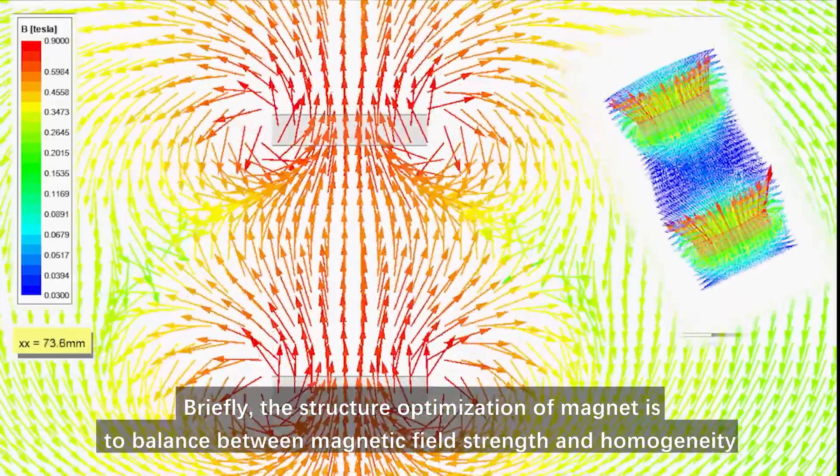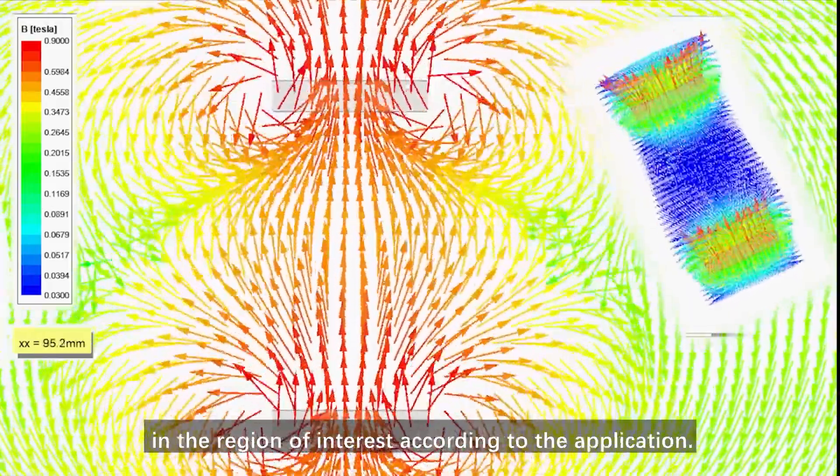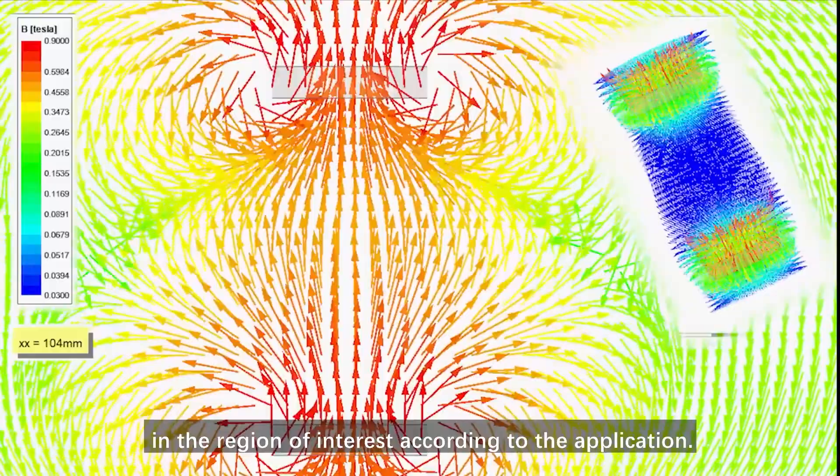Briefly, the structure optimization of magnet is to balance between magnetic field strength and homogeneity in the region of interest according to the application.